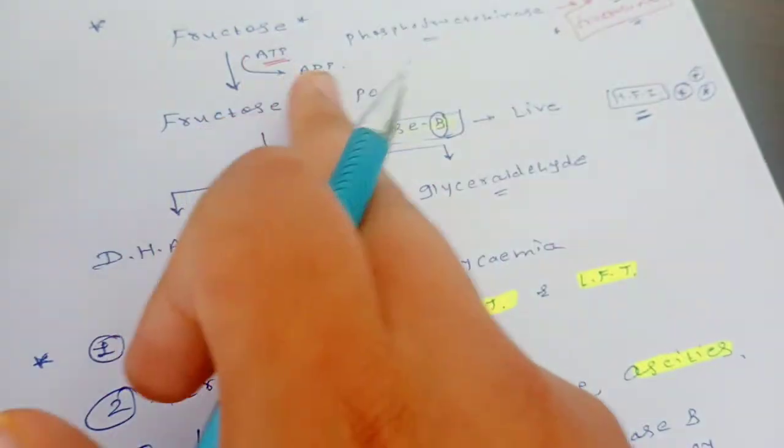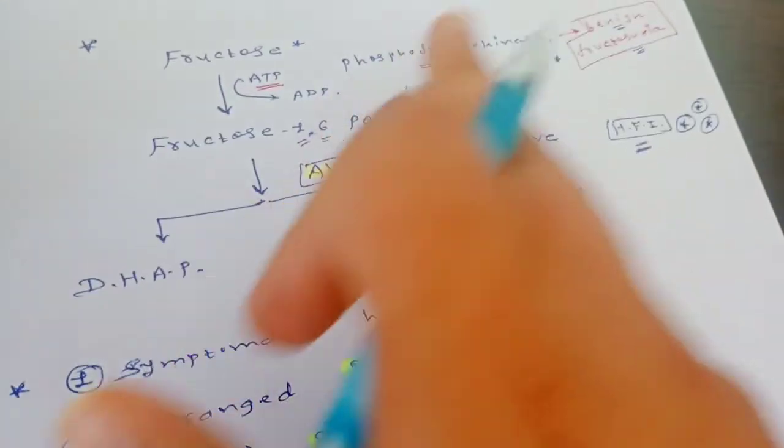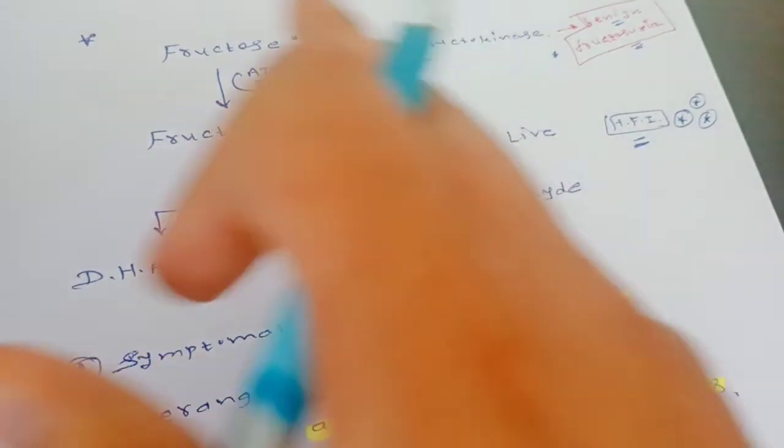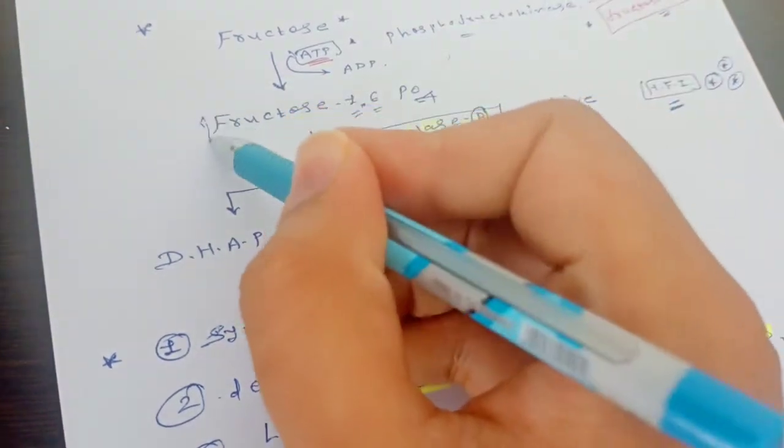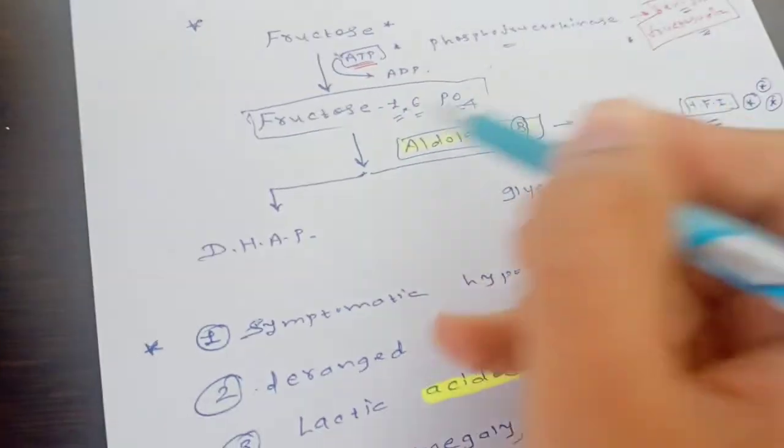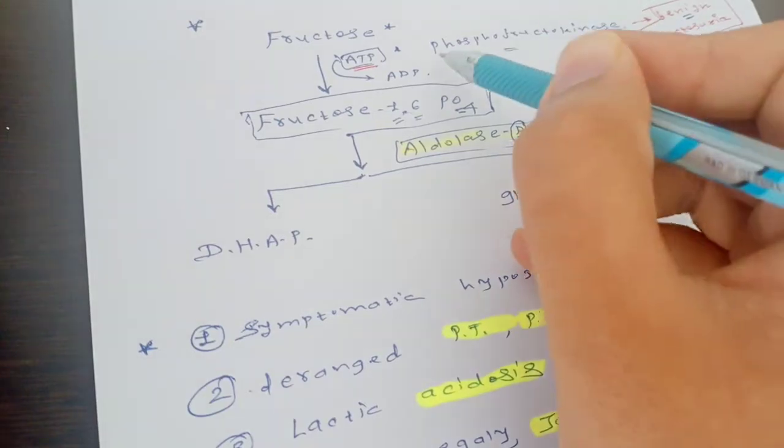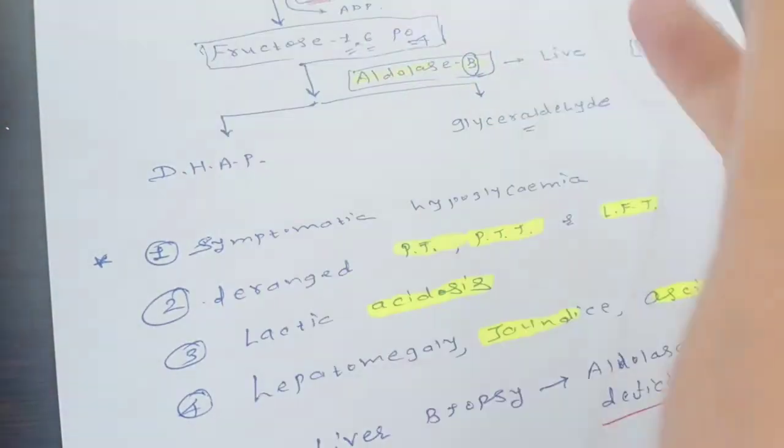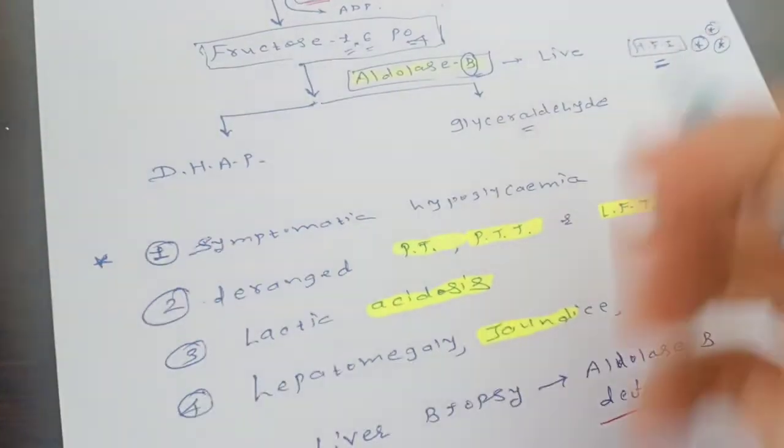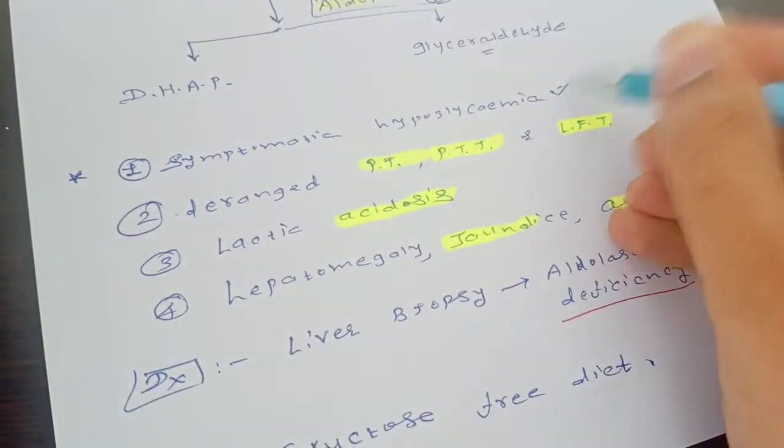Fructokinase is working, so all the ATP will be utilized. What does it produce? It will decrease the supply of ATP, and all the fructose up to this step will be formed, fructose-1,6-phosphate. So phosphofructokinase will utilize ATP, and all the rest of the glucose we are eating also will be depleted. So it will produce symptomatic hypoglycemia.